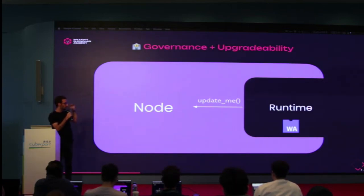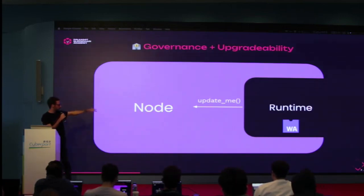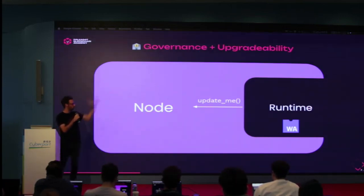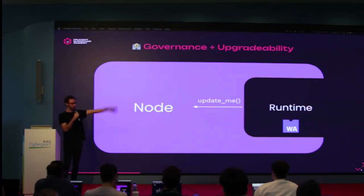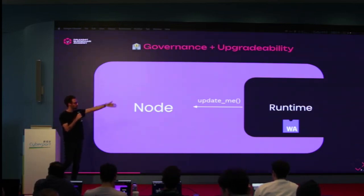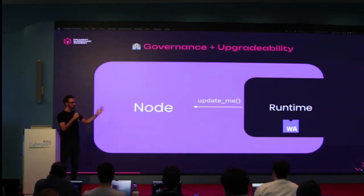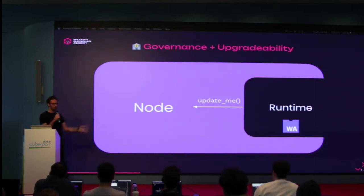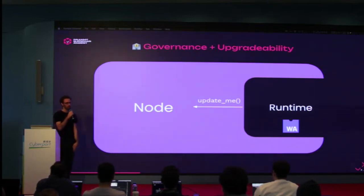The main responsibility of the node side is to run whatever that WebAssembly is encoding. And then the upgrade process becomes very easy — the runtime itself can signal to the node to upgrade to something else, and then you replace that code with something else.